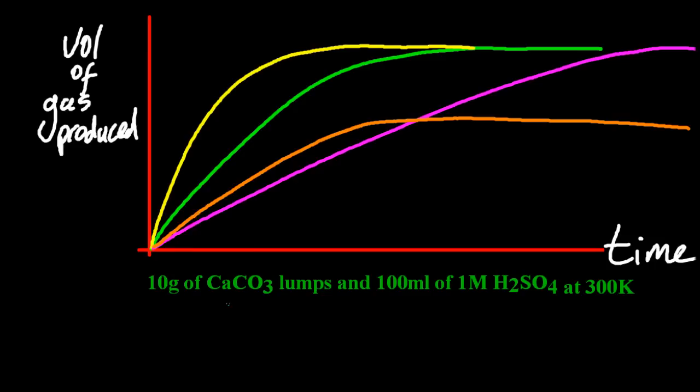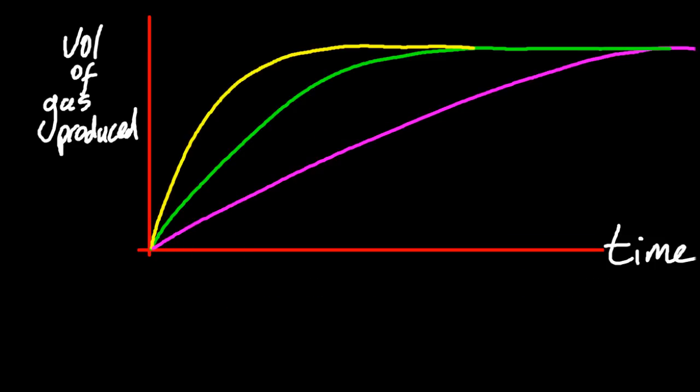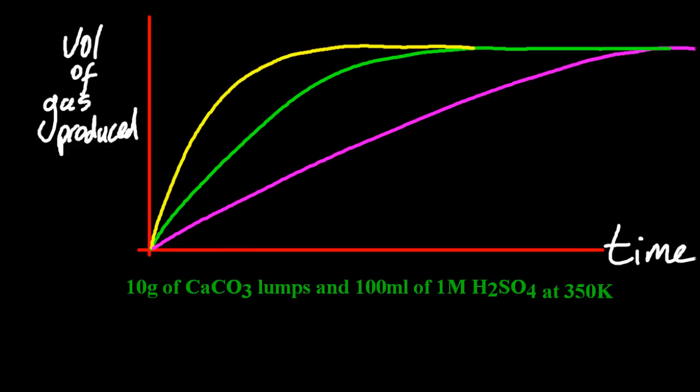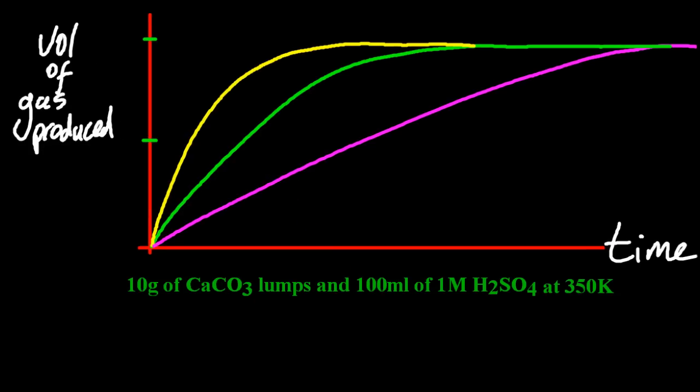Drawing in a couple more curves. So if I've got 10 grams of calcium carbonate and 100 milliliters of 1 molar sulfuric acid, let's say that's the green line at 350 Kelvin. So that's the central line, if you're color blind, or watching in black and white, or listening in black and white.